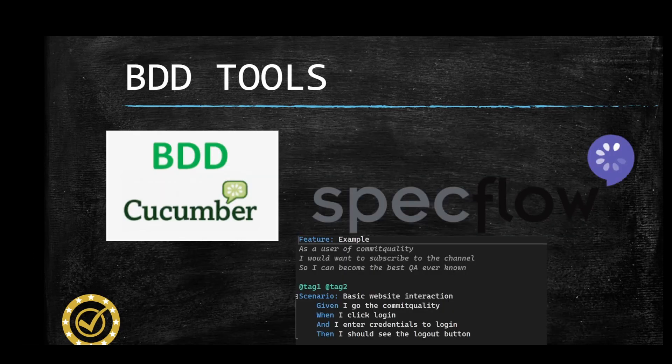There are plenty of BDD tools as well. Cucumber is a popular BDD tool that supports multiple programming languages and facilitates collaboration between stakeholders. SpecFlow is a common BDD tool for .NET developers — just like Cucumber, it allows you to write scenarios in natural language whilst also allowing you to automate tests. You also have Behave, a BDD tool for Python developers that integrates seamlessly with popular testing frameworks like PyTest. And Reqnroll is a newer one for .NET as well.